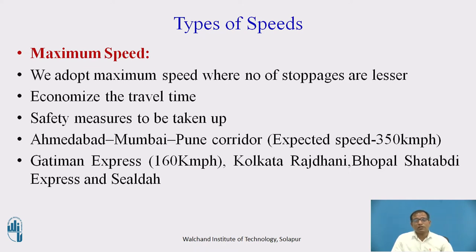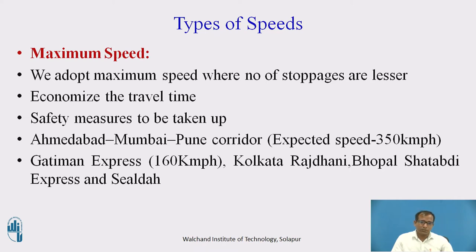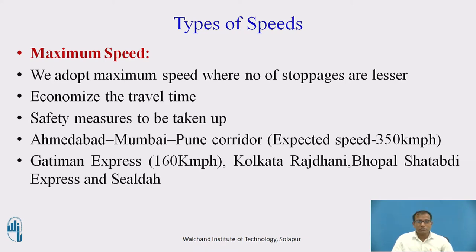When operating at higher speeds, we must ensure that safety measures are taken care of, otherwise there is a possibility of accidents. Some high-speed corridors include the Ahmedabad-Mumbai-Pune corridor, where trains travel up to 350 kmph. Gatiman Express runs at 160 kmph, and Rajdhani and Shatabdi trains reach up to 150 kmph. In such cases, we must consider whether proper safety measures and super elevation are in place for the track to handle these speeds.